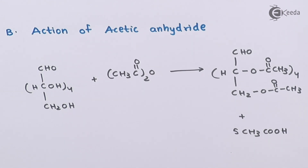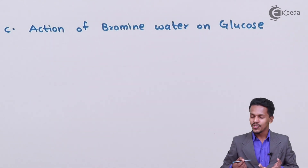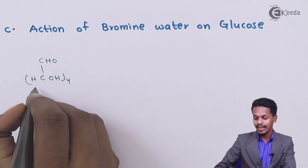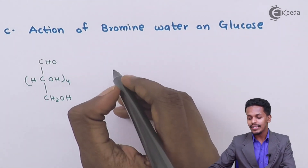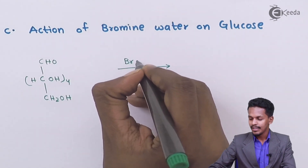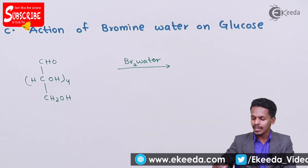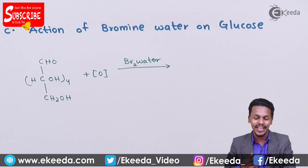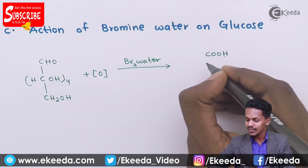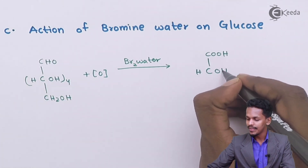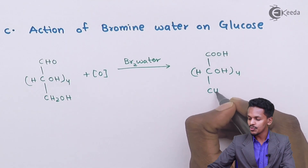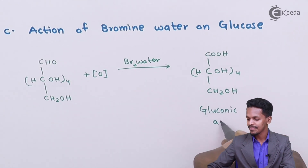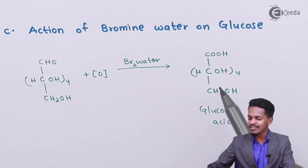The next reaction is the action of bromine water on glucose. The structure is CHO, CHOH four times, and CH2OH. When glucose is treated with bromine water, bromine water provides nascent hydrogen atoms, and the aldehyde group at the top gets oxidized to give a carboxylic acid. The product is COOH at the top, with CHOH four times and CH2OH below. The name of this product is gluconic acid.